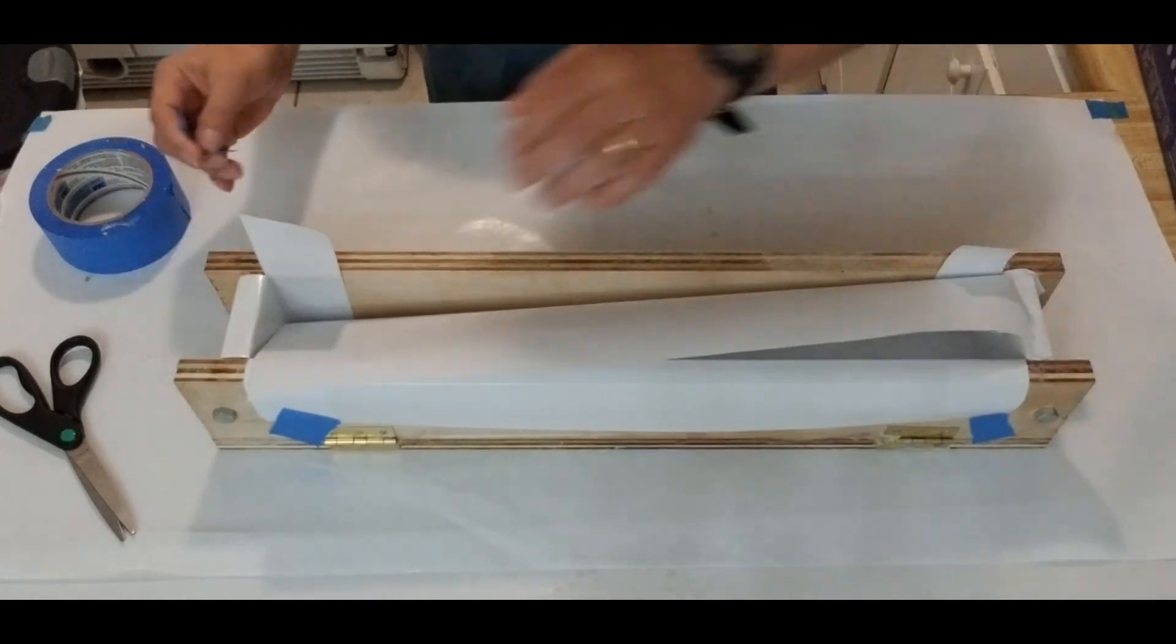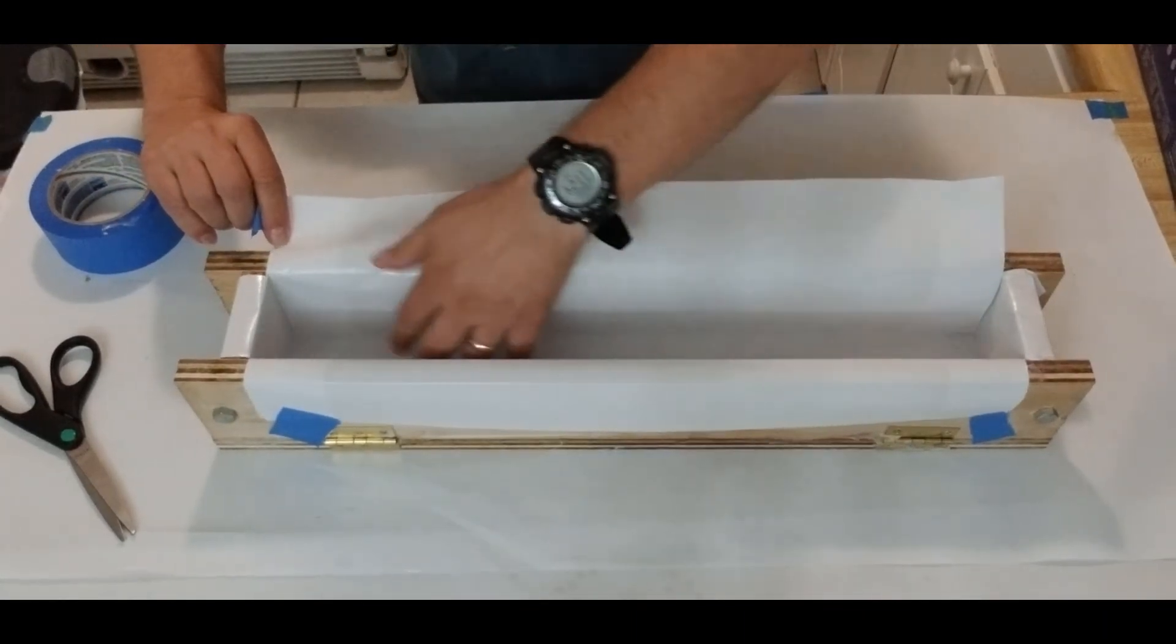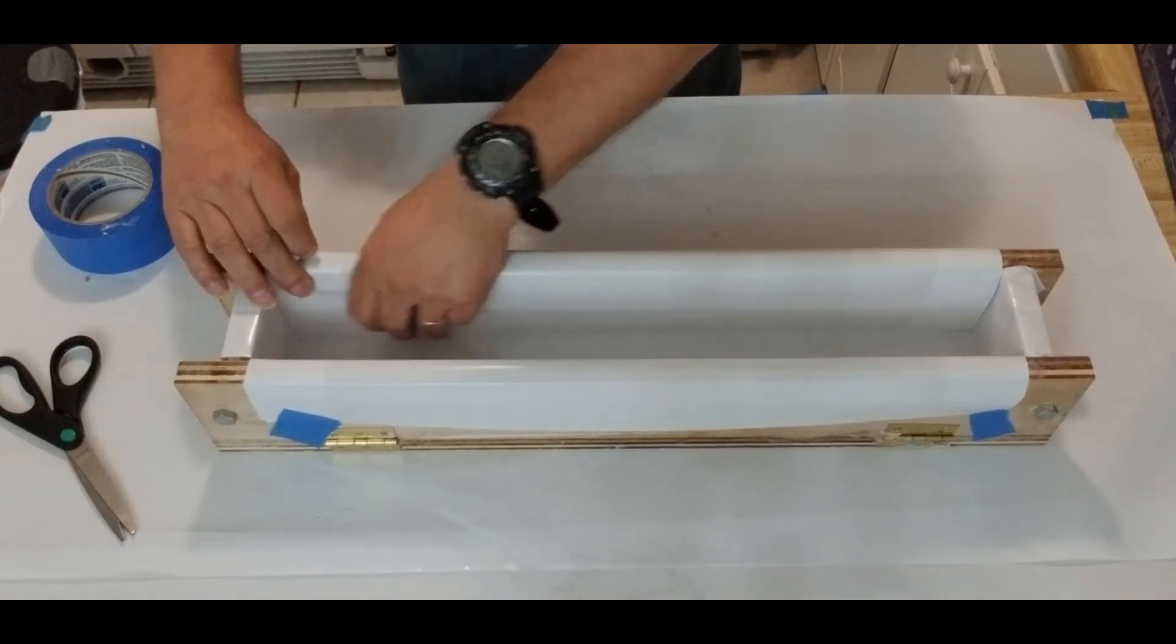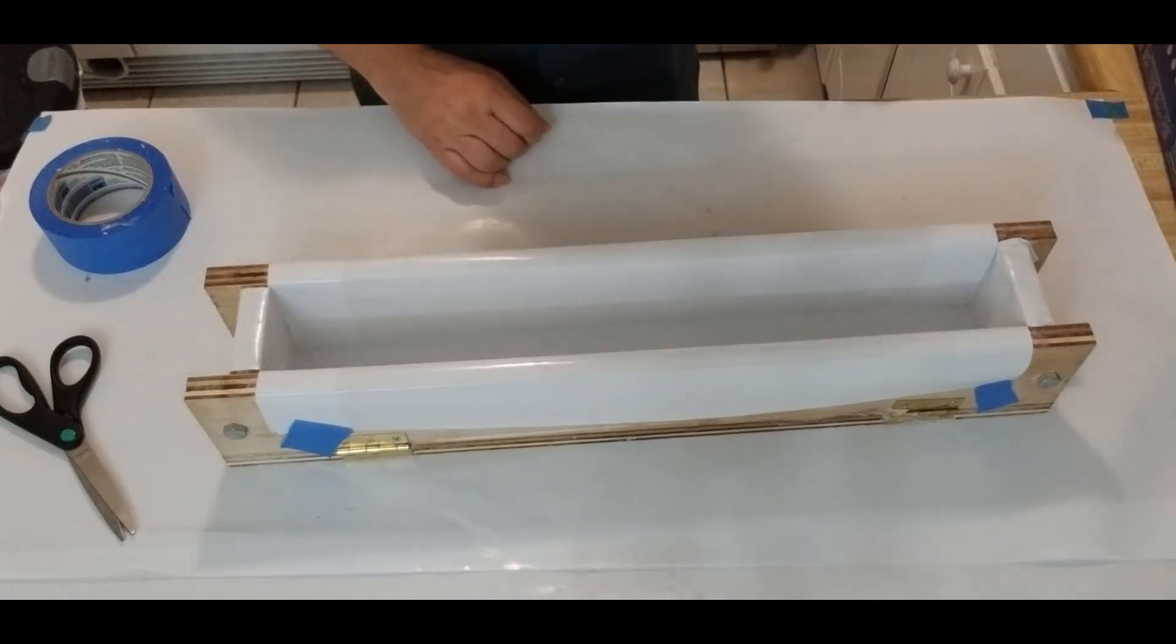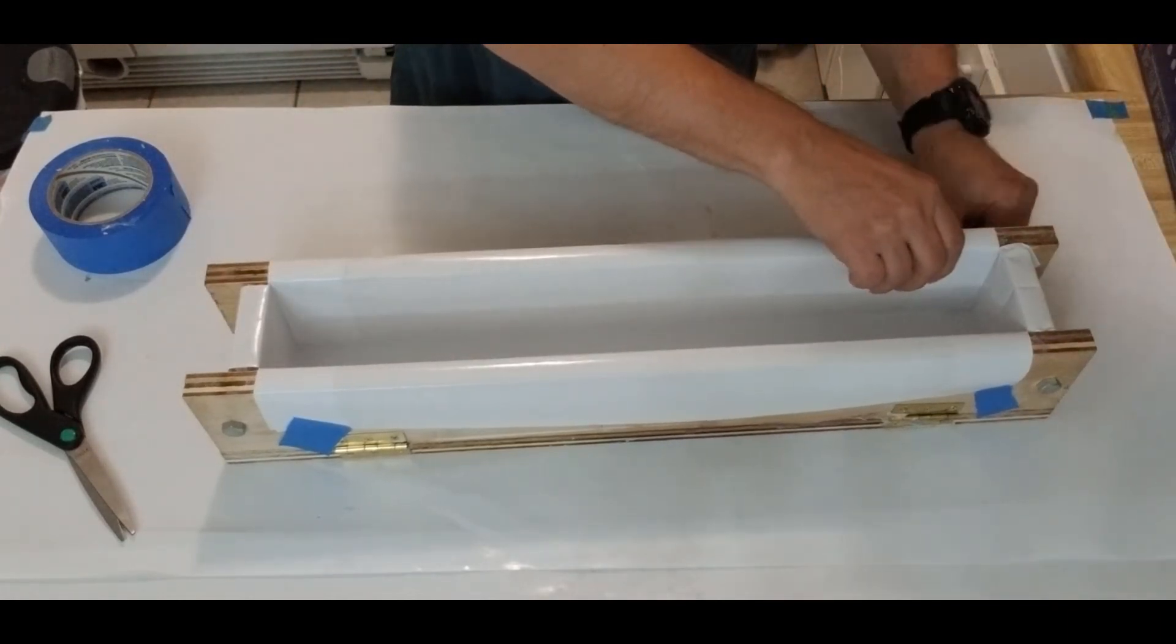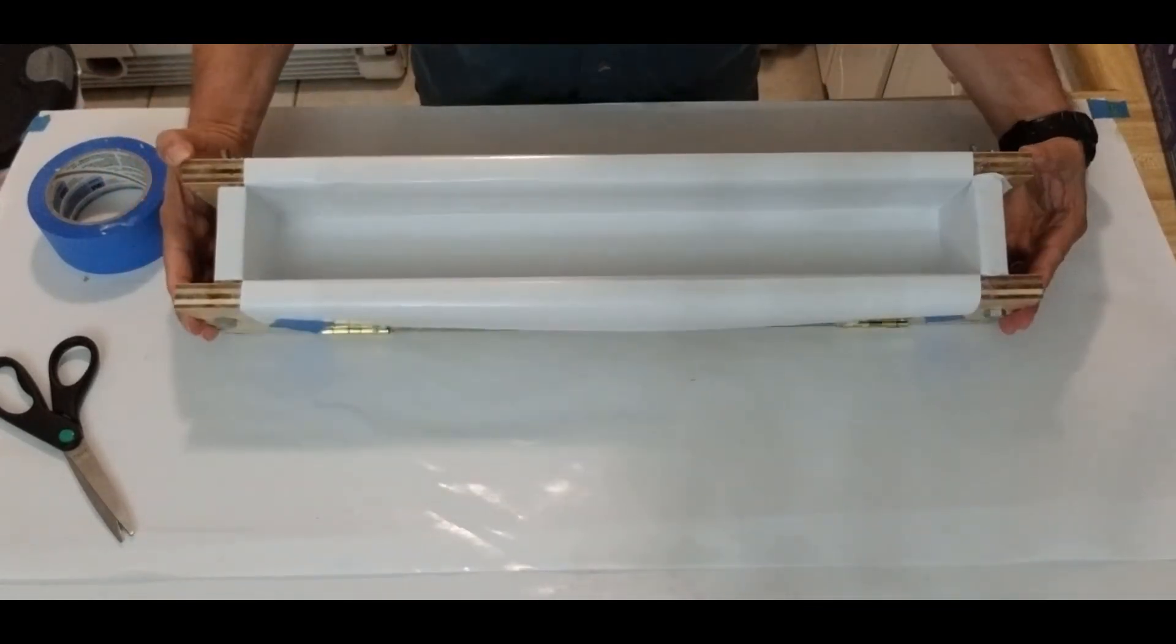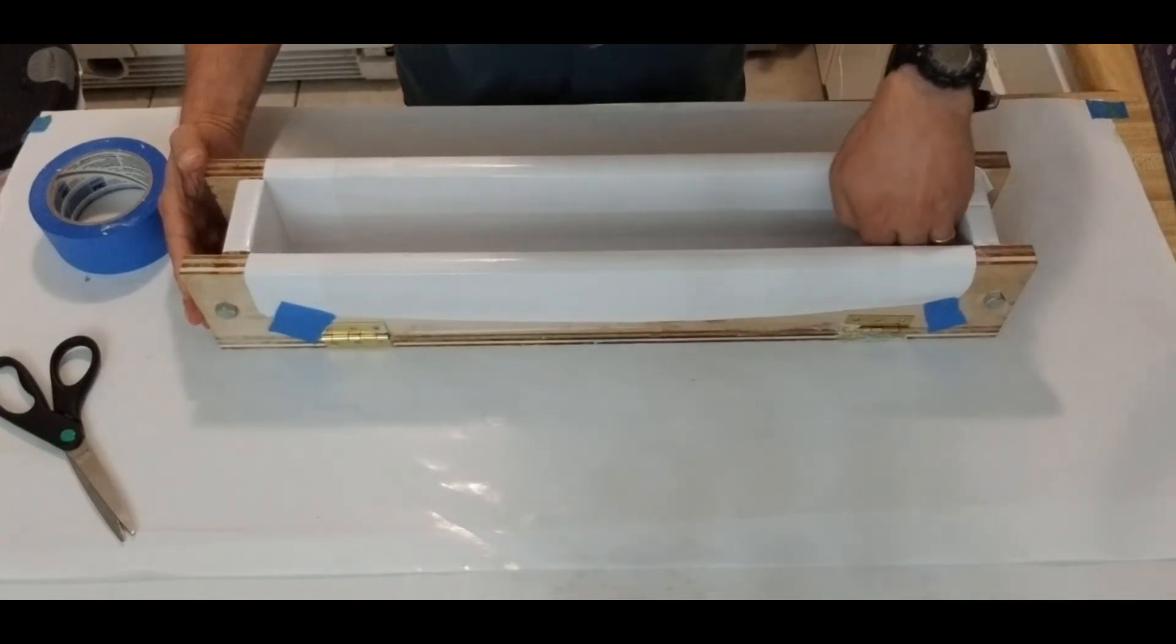I'm going to do the same on this side here. Just pulling these down, making sure the paper is all the way down in the mold. Last piece of tape, and there you have it. You have a mold that's fully lined, ready to take soap.